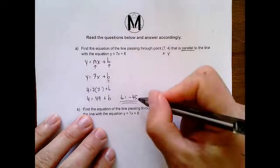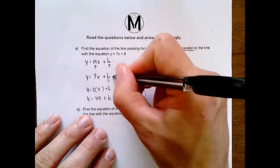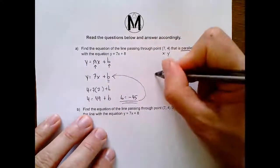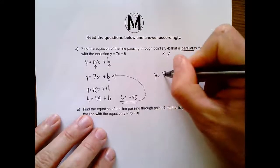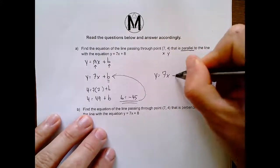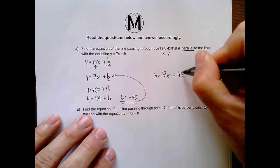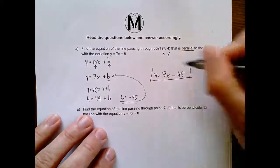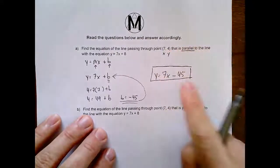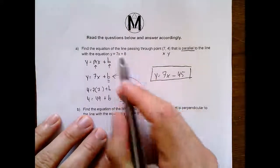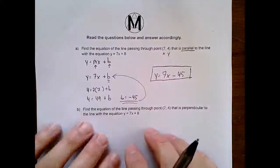So now I have my b value, and now I can take that, stick it in right here, and that would be my answer. So my answer is y equals, my slope is 7, and my b value is negative 45. And that is the equation of the parallel line. And it will be parallel to this line, and you know that because the slopes are the same. Okay, let's check out the next one.